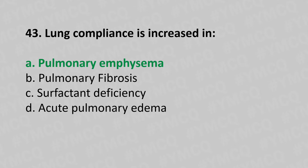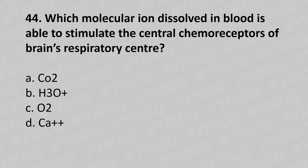Now let's move to question number 44. Which molecular ion dissolved in the blood is able to stimulate the central chemoreceptors of the brain's respiratory center? Option A: CO2. Option B: CO3 plus — that's carbonate. Option C: CO2 and oxygen. Option D: Calcium Ca2+. And the answer is Option A, CO2, that's carbon dioxide.